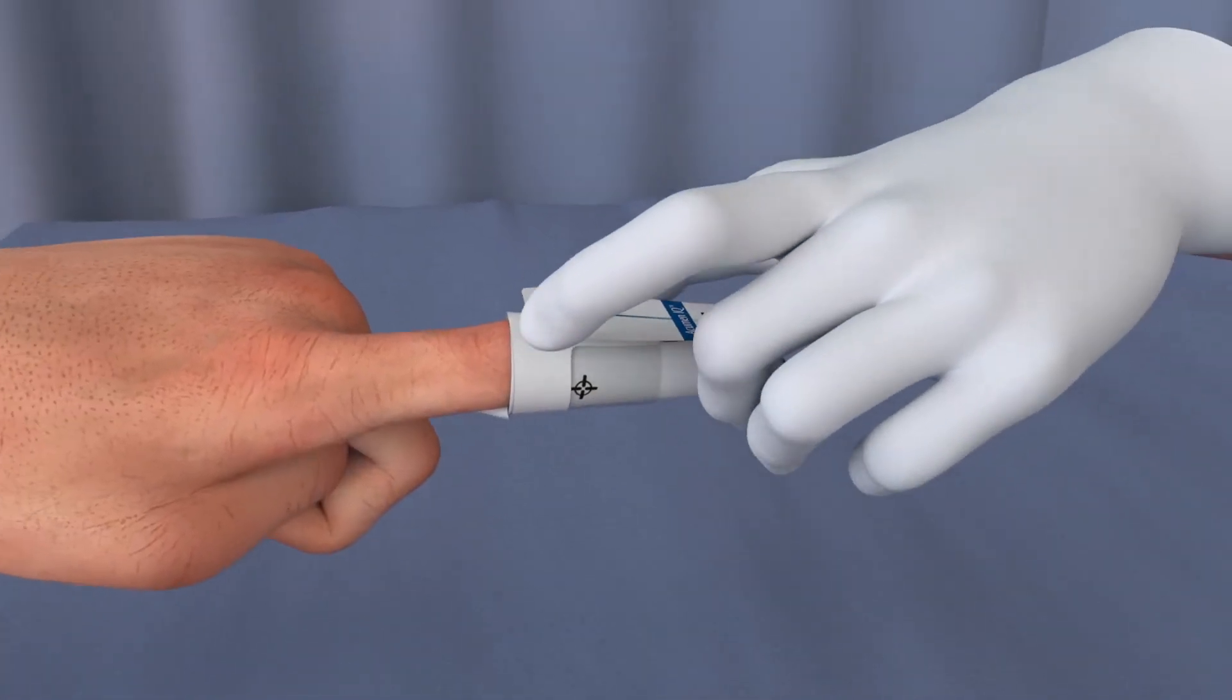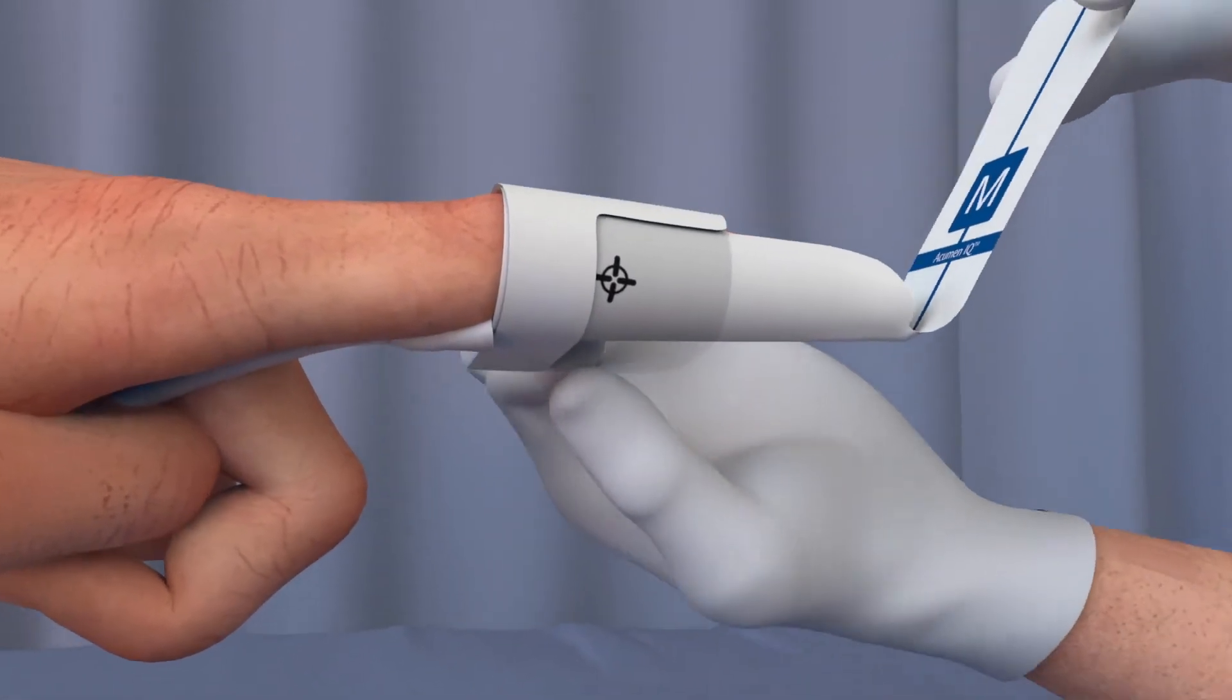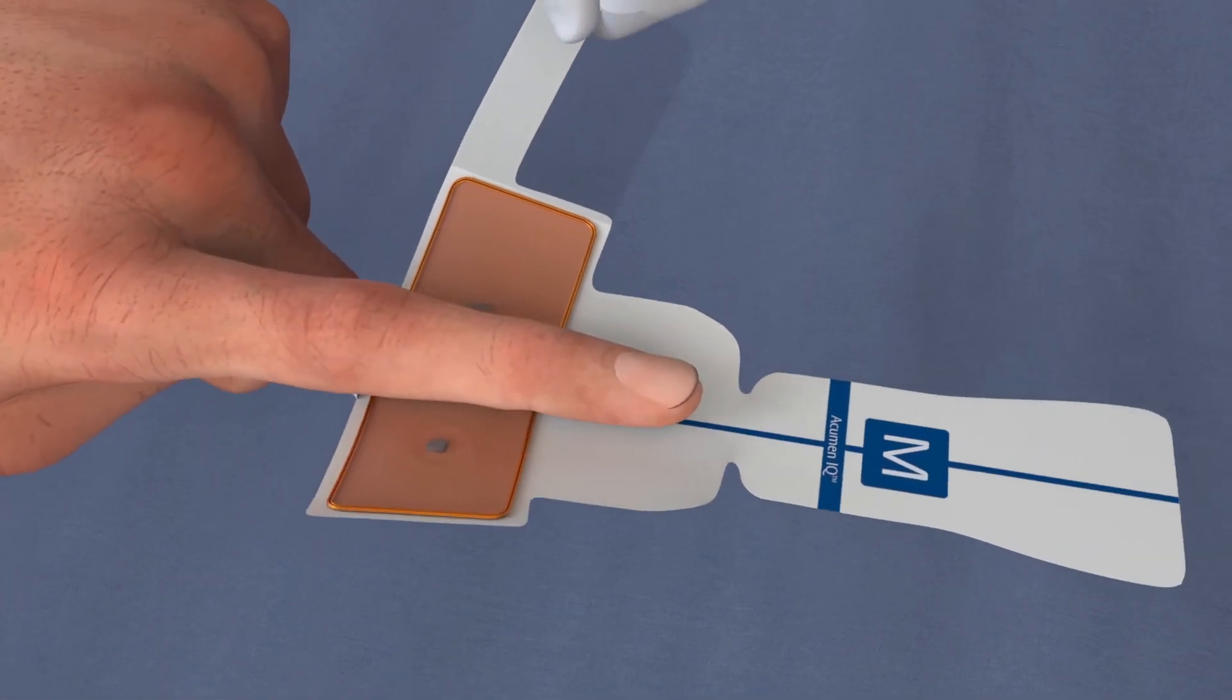To remove the cuff, pull on the end of the tab that is not adhered to the cuff. Ensure not to pull on the white tab.